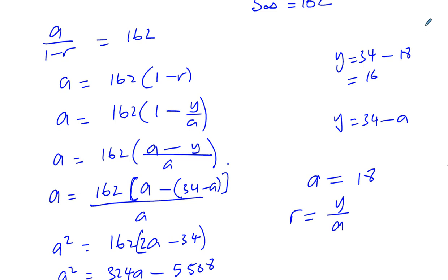18 plus 16 is 34. So we know that the common ratio is going to be y, which is 16, over a, which is 18. What's common in these two? 2 is common. Divided by 2, divided by 2. So the common ratio is 8 over 9.